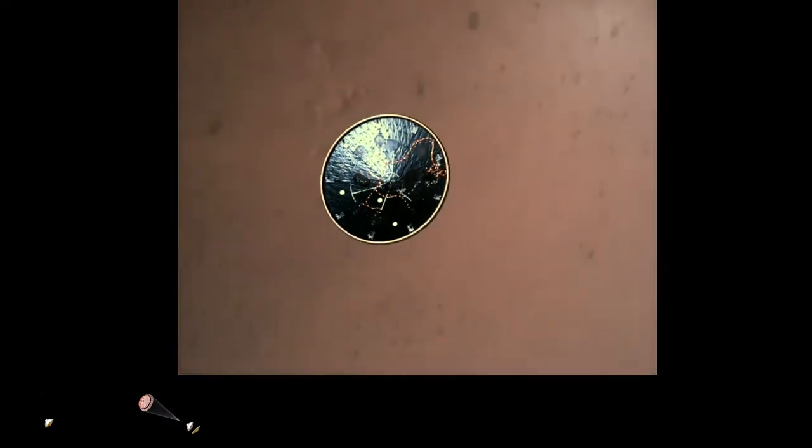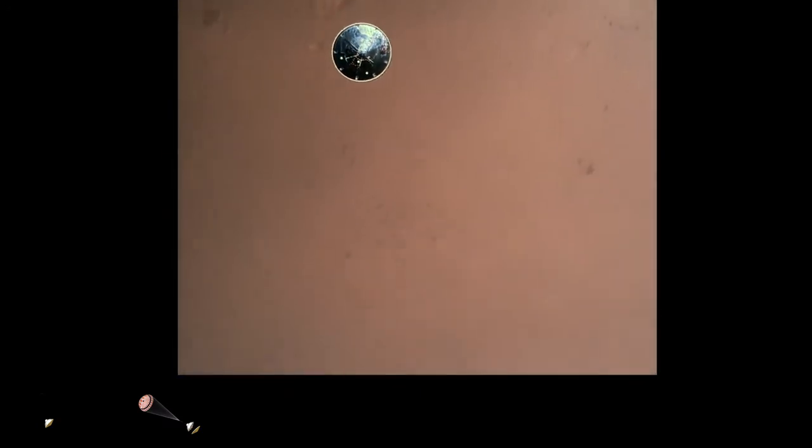Heat shield separated. Perseverance has now slowed to subsonic speeds, and the heat shield has been separated. This allows both the radar and the cameras to get their first look at the surface. Current velocity is 145 meters per second at an altitude of about 9.5 kilometers above the surface.